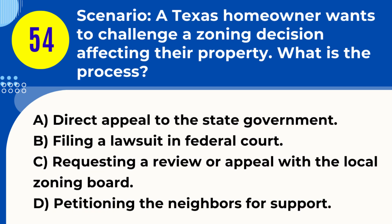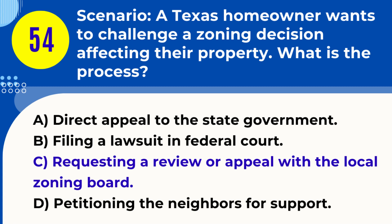Question 54. Scenario: A Texas homeowner wants to challenge a zoning decision affecting their property. What is the process? A. Direct appeal to the state government. B. Filing a lawsuit in federal court. C. Requesting a review or appeal with the local zoning board. D. Petitioning the neighbors for support. Answer: C. Requesting a review or appeal with the local zoning board. Explanation: To challenge a zoning decision in Texas, a homeowner should request a review or appeal with the local zoning board, following the procedures set by the municipality.